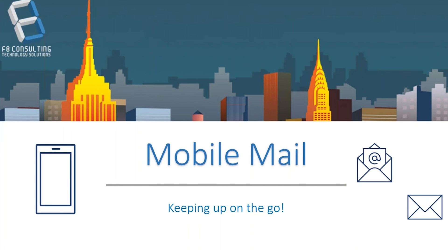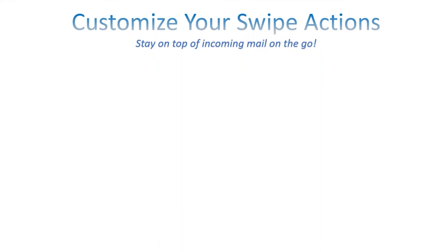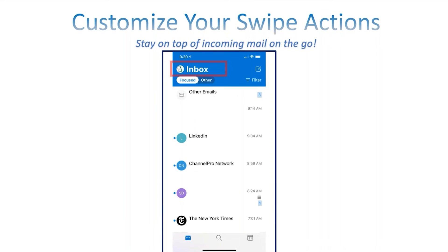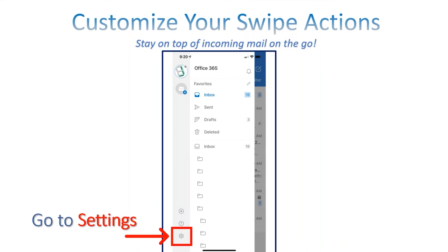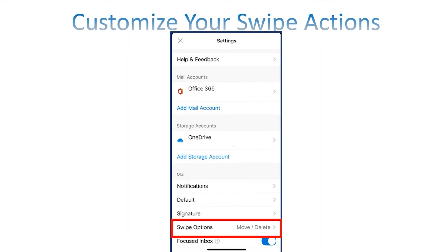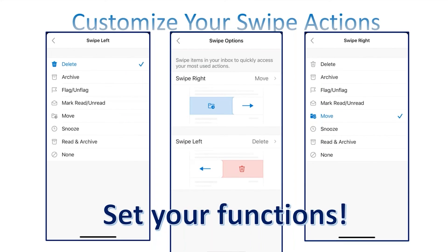Now we're moving on to mobile mail to help you keep up on the go. First up is customizing your swipe actions to stay on top of incoming mail while away from your desk. Go to your inbox, click on your avatar at the top, go to Settings (the gear icon at the bottom of the screen), then under Mail tap on Swipe Options. You can customize your swipe right and swipe left functions — mine are set to Move and Delete, but you can choose archive, flag, move, read, or other options.